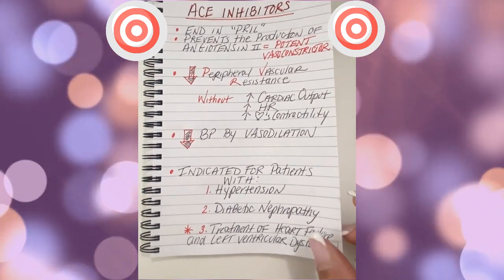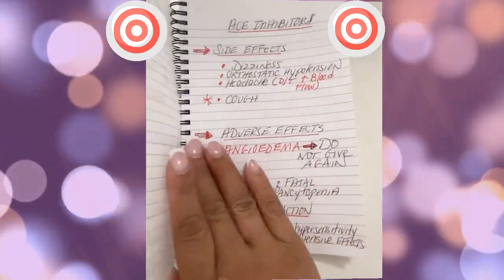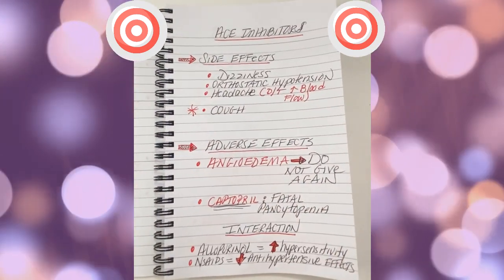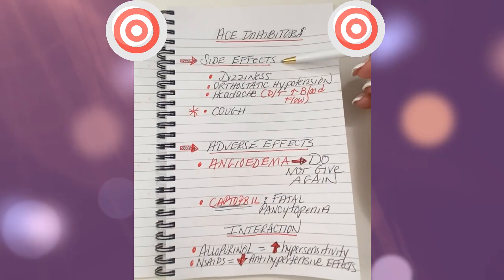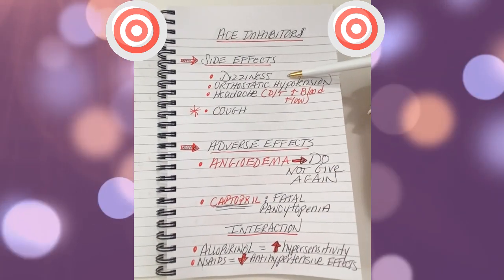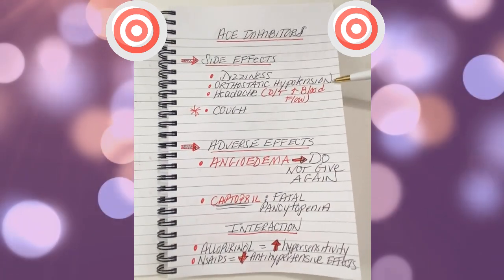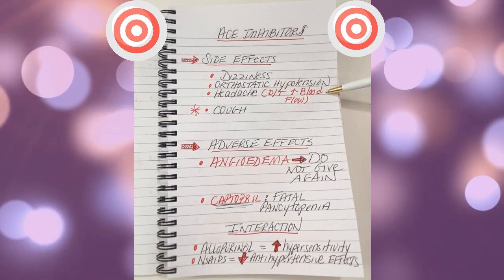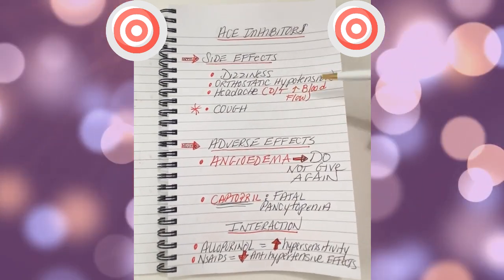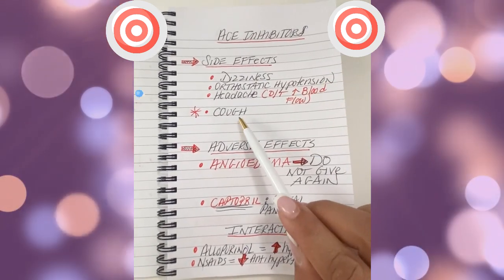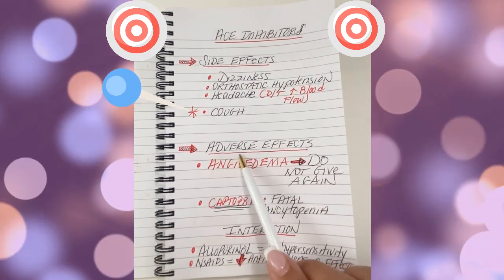What are the most common side effects that you as a nurse have to monitor when patients are taking an ACE inhibitor? They may get very dizzy, they may have orthostatic hypotension due to the lowering of the blood pressure, and because of that they may get a headache due to increased blood flow, and they may get a very annoying dry cough.